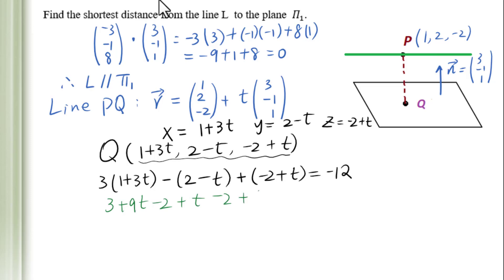Combine like terms: 11t - 1 equals -12, so 11t equals -11, therefore t equals -1.